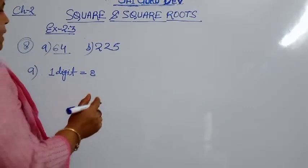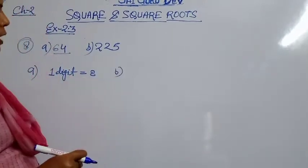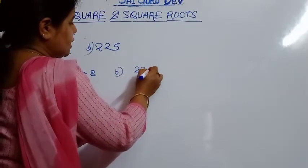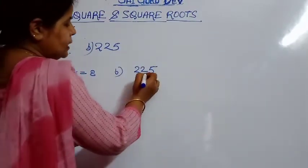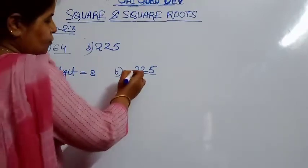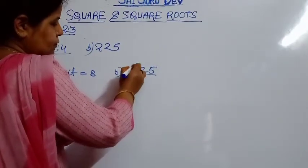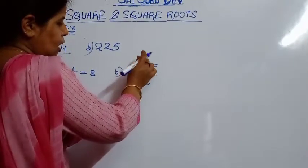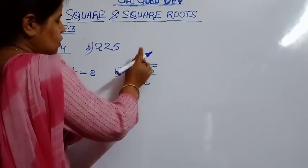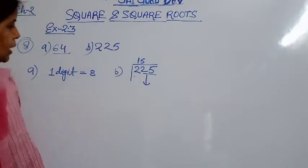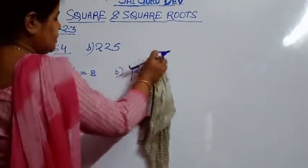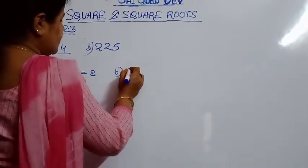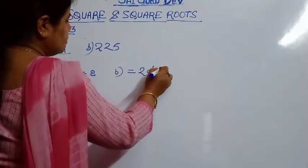For part A: 225. You already know 225 is the square of 15. While finding the square root, we make pairs from the right. Here we get one pair and one remaining digit, so one digit comes for the pair and one more for the remaining, giving two digits in the square root of 225.